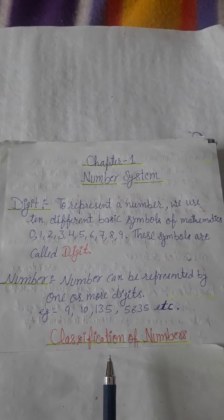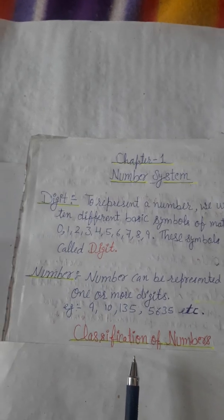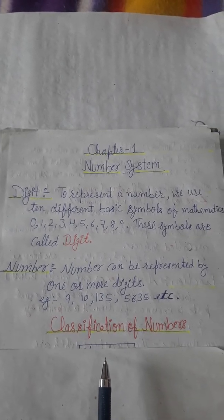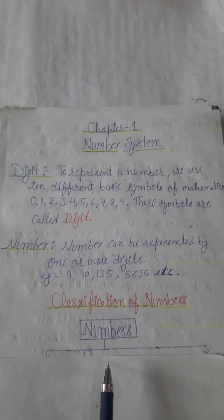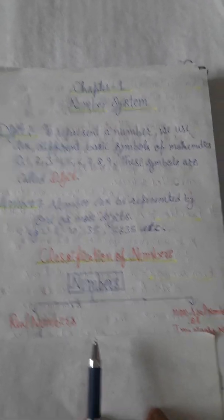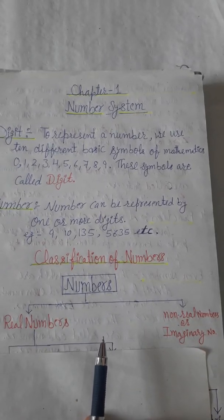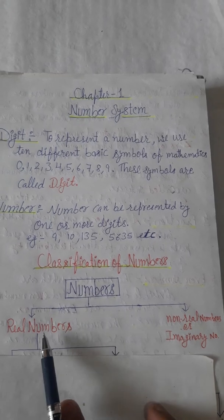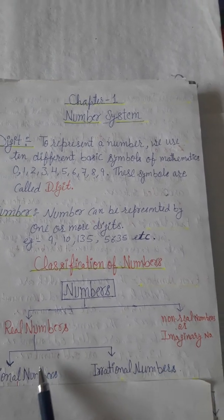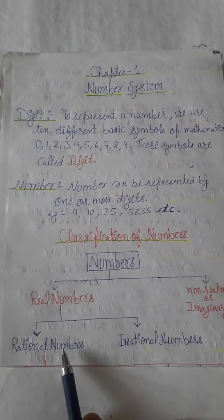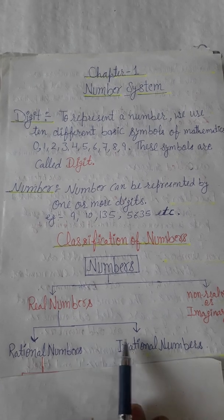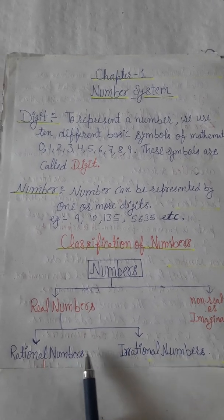Next, we must know about classification of numbers. Numbers are classified into real numbers and non-real or imaginary numbers. We are going to discuss real numbers. Real numbers are further categorized into rational numbers and irrational numbers.